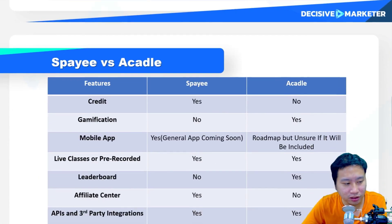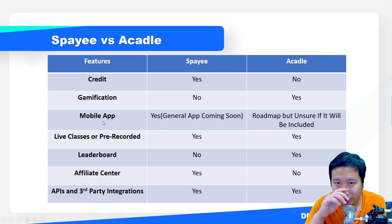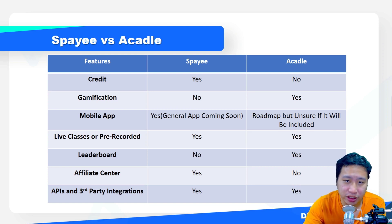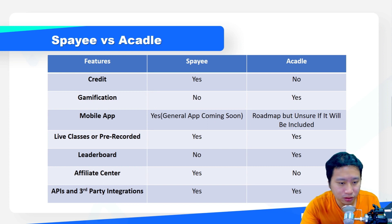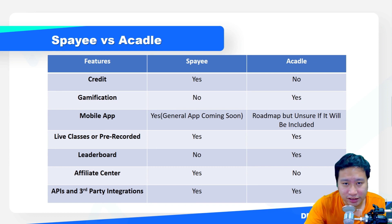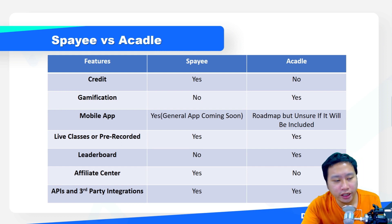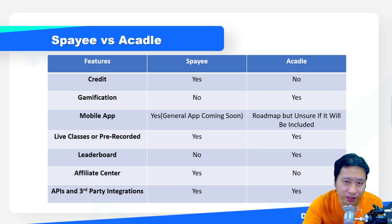Moving on to mobile apps — this is where you start to really see differences. With Spayee, they give you a general app with their own branding, and it's included in the plan. With Acadle, they have not yet released a mobile app, and it's still undecided whether it will be included in the plan or charged as an additional fee. For white-label apps with your own branding, Spayee charges an additional fee, and with Acadle that's still unsure at the moment.